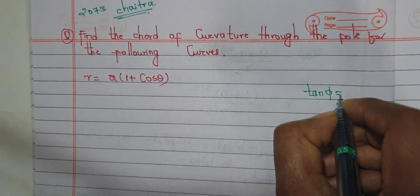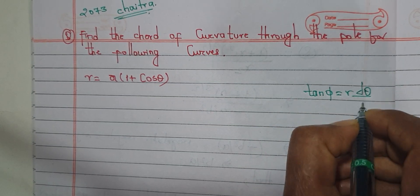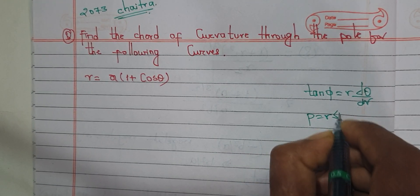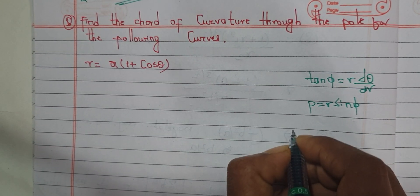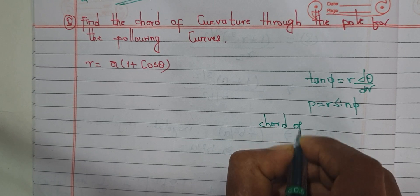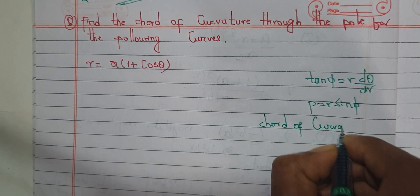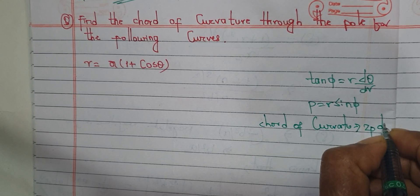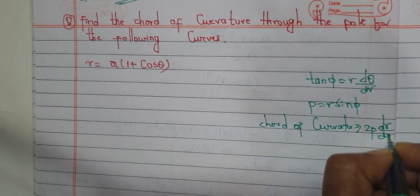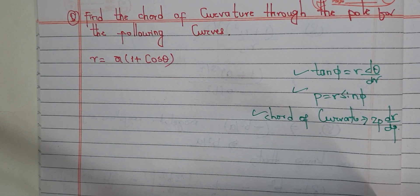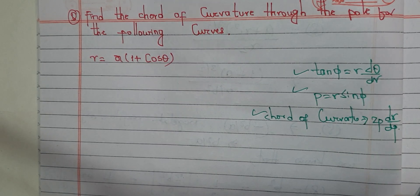The formula we will use is: tan φ is equal to r dθ/dr. p is equal to r sin φ. The code of curvature formula is equal to 2p dr/dp.